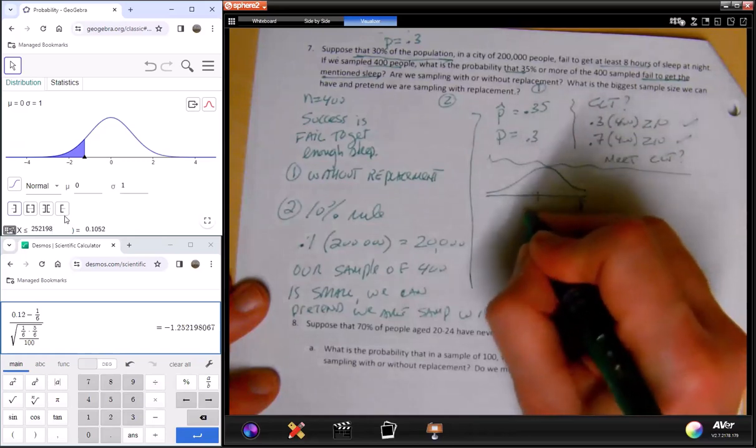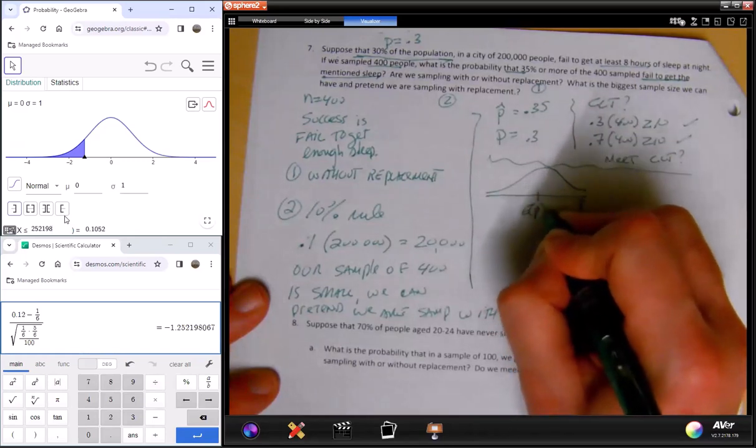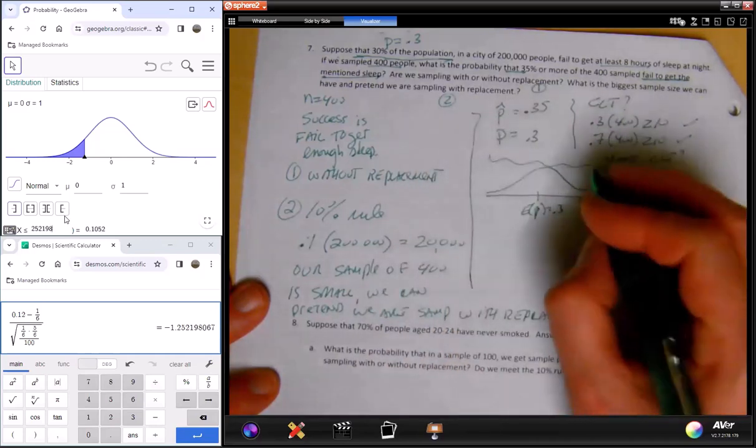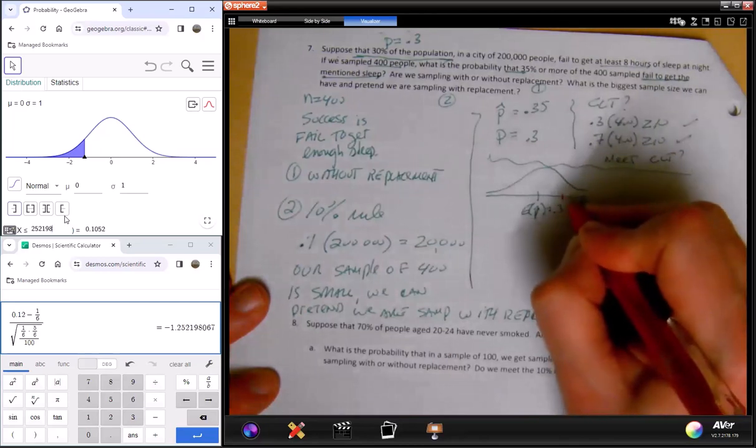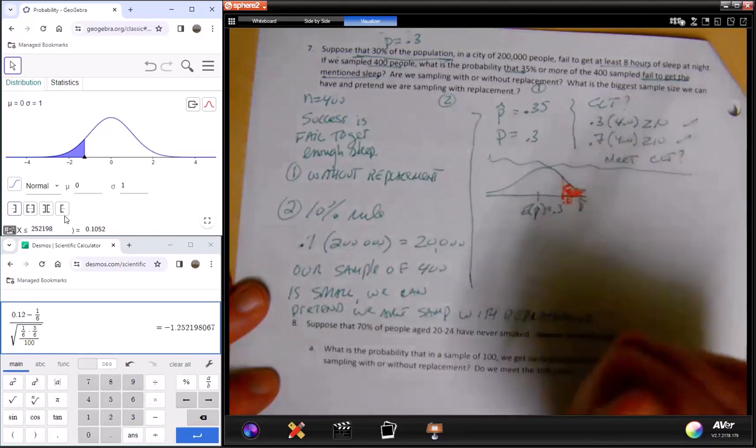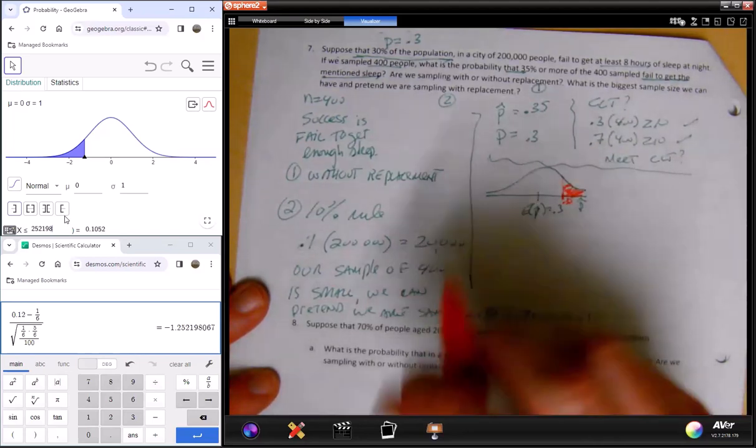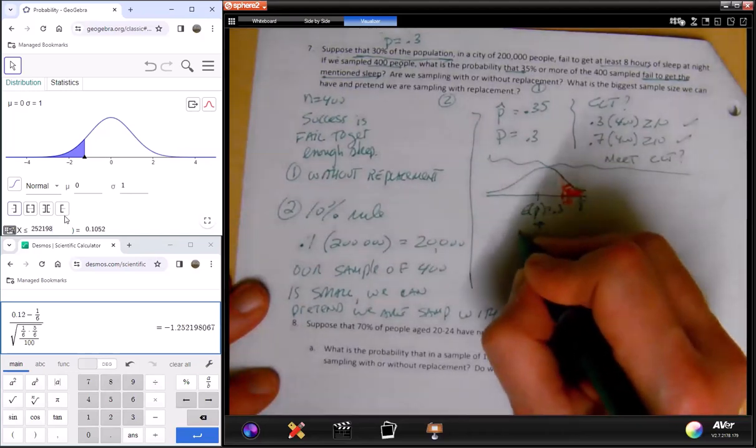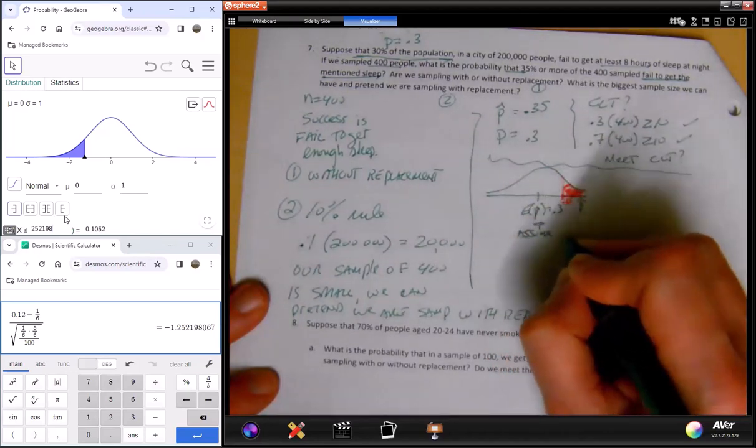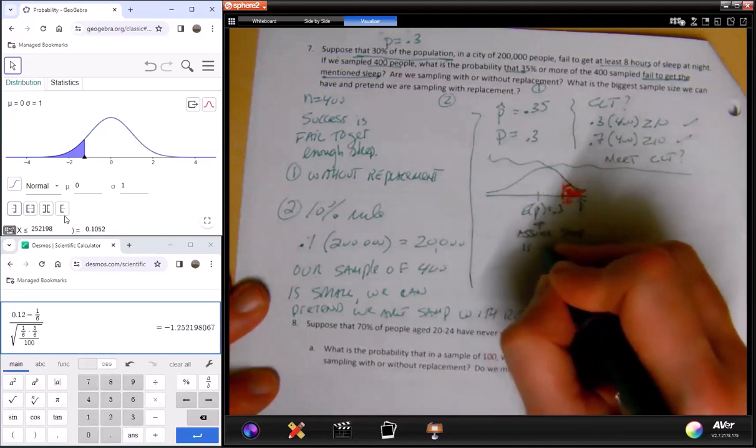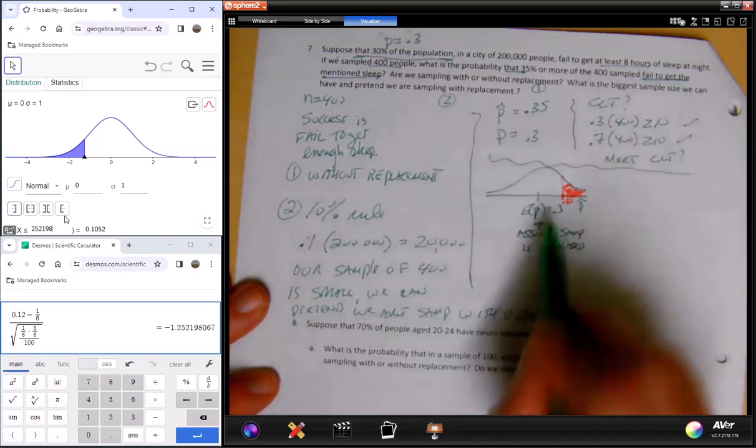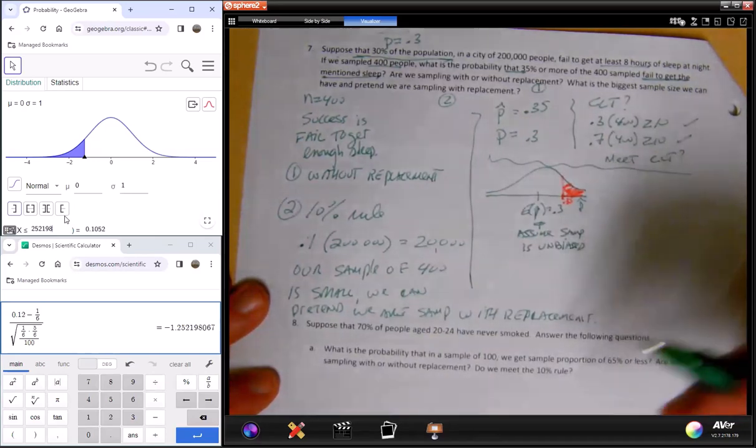So what's at the center of this? E of p-hat, which is 0.3. What do we want? 35% or more, so 35%. So we're here, somewhere. And we're after the chance of getting a p-hat of 35% or greater. Again, assume sampling is unbiased. And it's only true that the sampling process is unbiased.